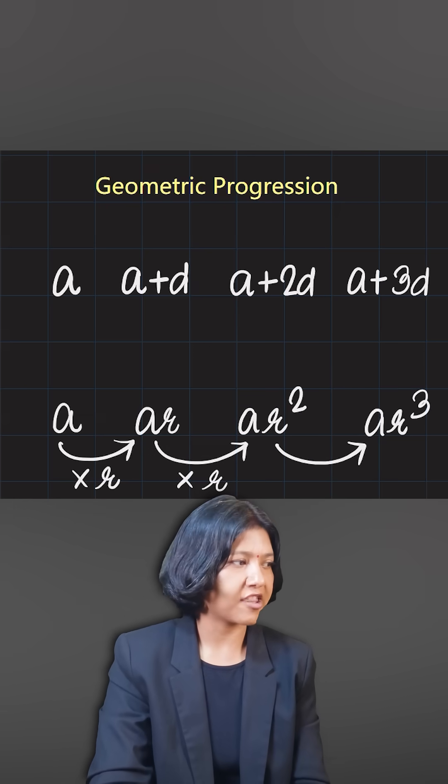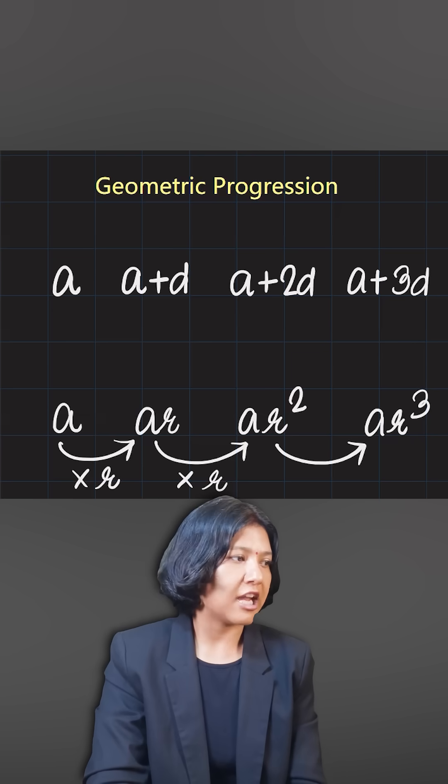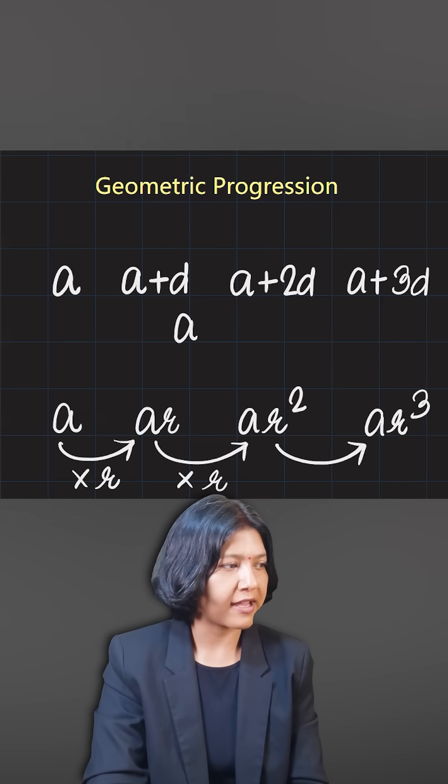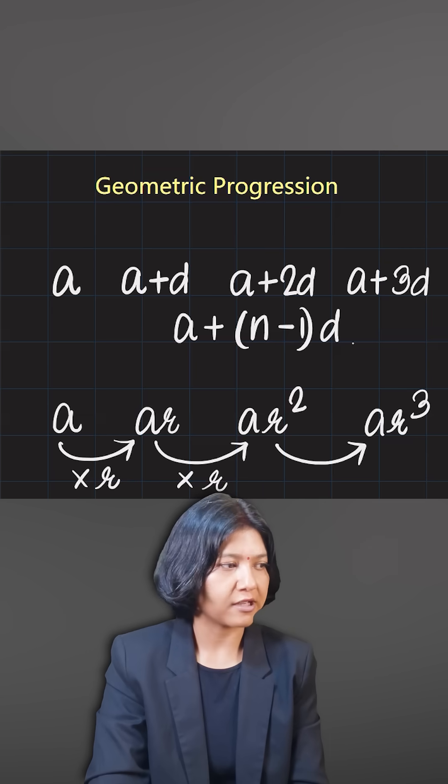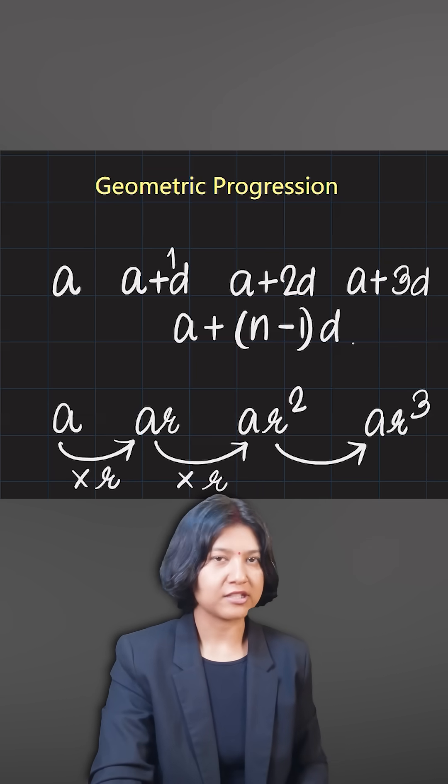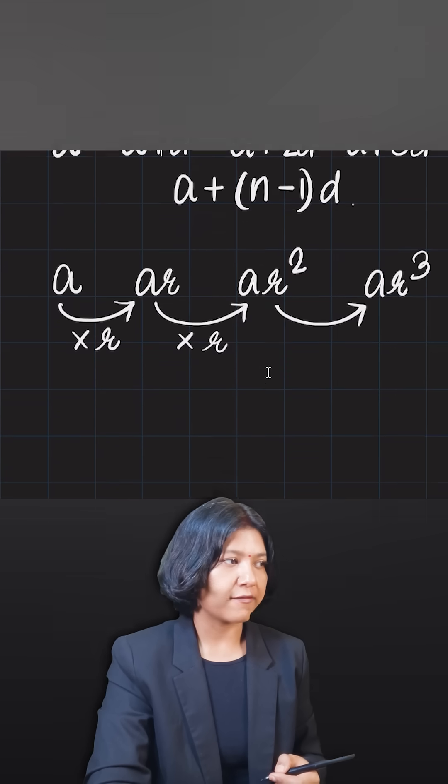Just like in arithmetic progression, any term is obtained by adding the first term to the difference for one less time than its position—the second term has 1d, third term has 2d, and so on. The same thing applies here.